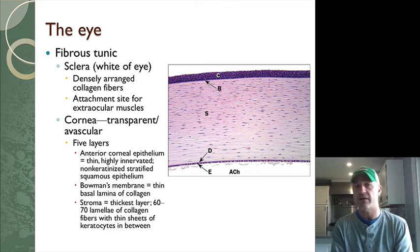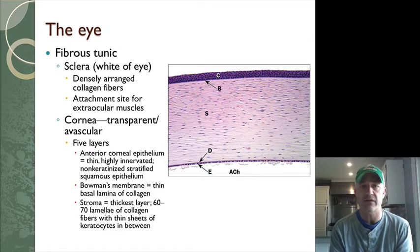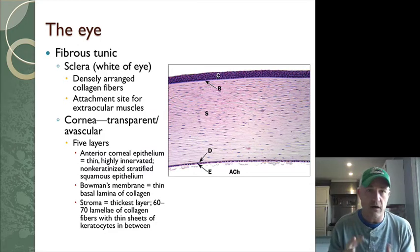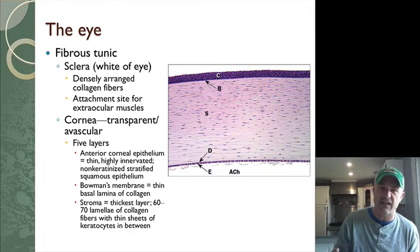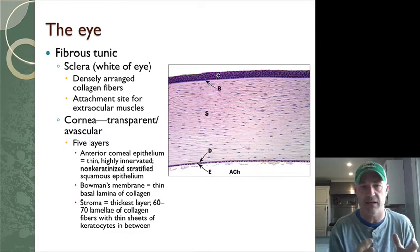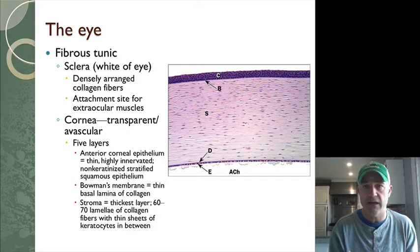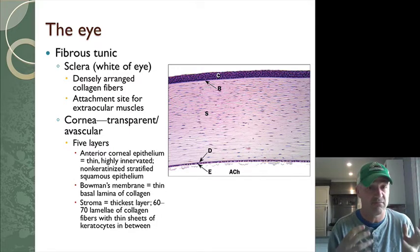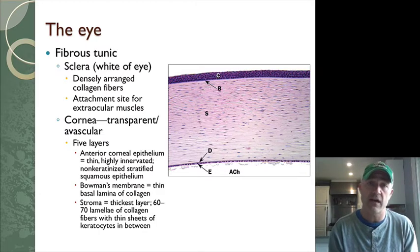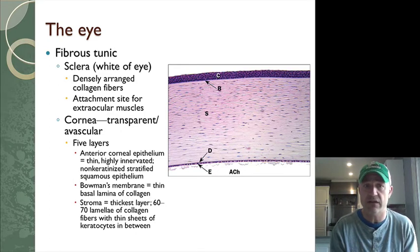The fibrous tunic is the outer part of the eye. It has two main parts: the sclera, which is the whites of the eye — a dense irregular connective tissue made of collagen fibers. It's actually quite hard to cut into. On the very front of the eye, you have a transparent part of this fibrous tunic called the cornea.